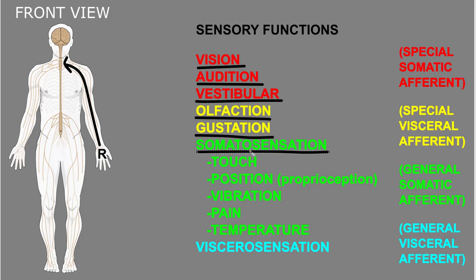These somatosensory stimuli are detected by receptors in the skin and deep tissues of the body. Similar types of stimuli can be sensed in what are called viscera, such as organs and blood vessels, and this is called viscerosensation.